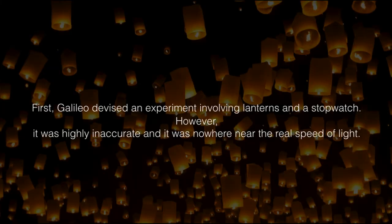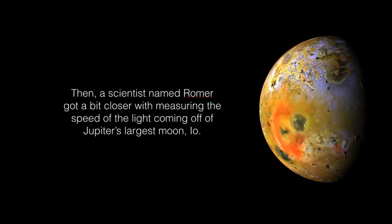First, Galileo devised an experiment involving lanterns and a stopwatch. However, it was highly inaccurate and it was nowhere near the speed of light. Then, a scientist named Romer got a bit closer with measuring the speed of the light coming off of Jupiter's largest moon, Io.